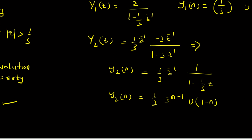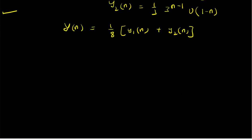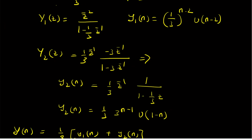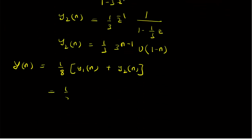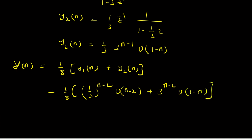Combining Y1 of n and Y2 of n using linearity, Y of n equals 1 by 8 times 1 by 3 power (n minus 2) times U of n minus 2 plus 1 by 8 times 3 power (n minus 2) times U of 1 minus n. The first term is a causal signal starting at n equal to 2, and the second is an anti-causal component going towards negative n.